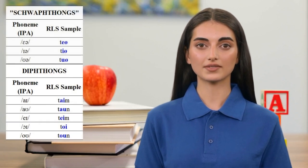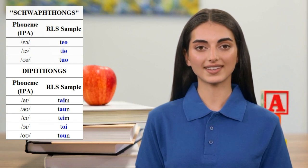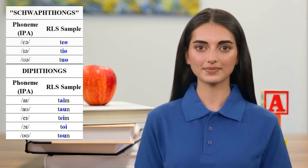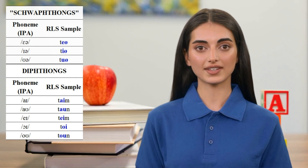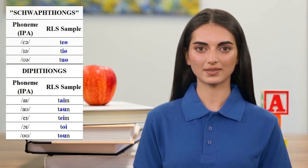The three schwa-thongs appear in the following words, spelled here according to RP: tear, tear, tour. The other diphthongs are included in these words: time, town, tame, toy, tone.